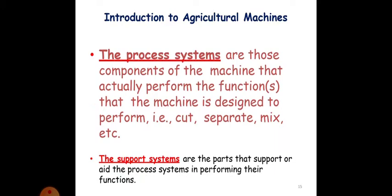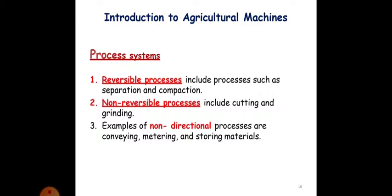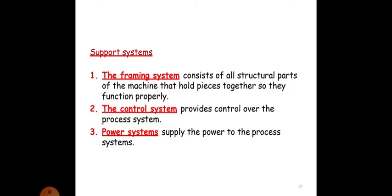Process systems: reversible processes includes the process such as separation and compaction. Non-reversible processes including cutting and grinding. Examples of non-directional processes are conveying, metering, storing materials, etc. So you have seen that there are different process systems which are very important for our use of machineries.